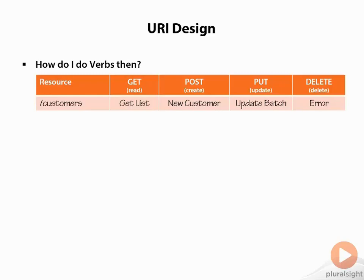If we take our resource endpoint like customers, we know that if we do a GET, it's going to return a list of those customers. If we POST a new customer to that endpoint, it's going to create a new customer. If we PUT a collection of customers to this endpoint, it will do a batch update. And if we try to issue a DELETE against that resource, it's going to give us an error because we cannot delete the entire list of customers.